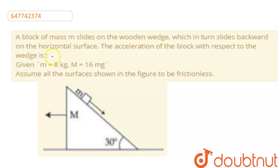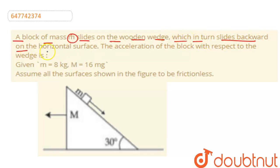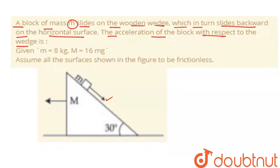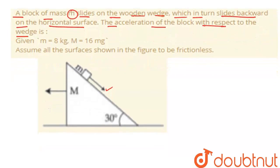So in this question we have a block of mass m that slides on a wooden wedge, which in turn slides backward on the horizontal surface. The acceleration of the block with respect to the wedge is to be found, and the values of small n and capital N will be determined.